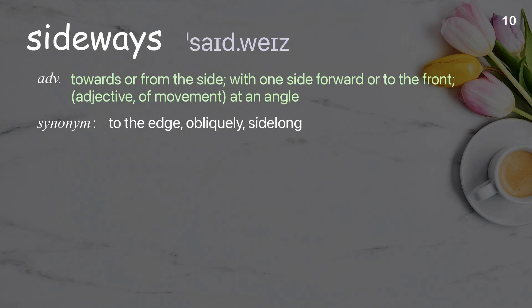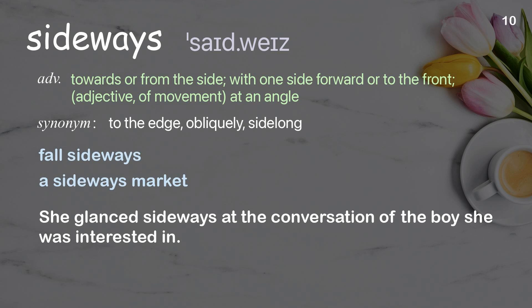Sideways: Towards or from the side; with one side forward or to the front; adjective of movement at an angle. Examples: Fall sideways. A sideways market. She glanced sideways at the conversation of the boy she was interested in.